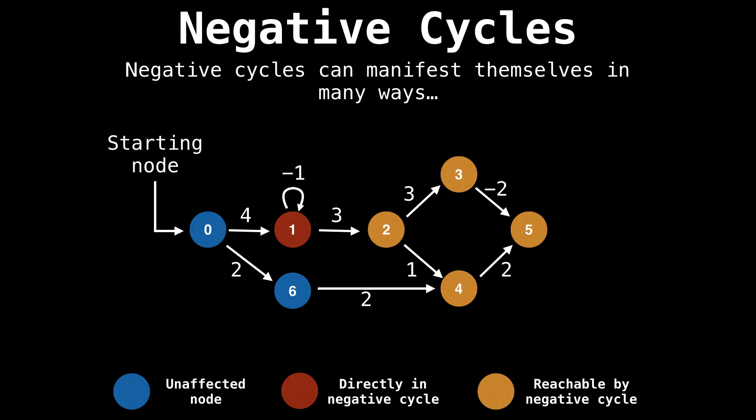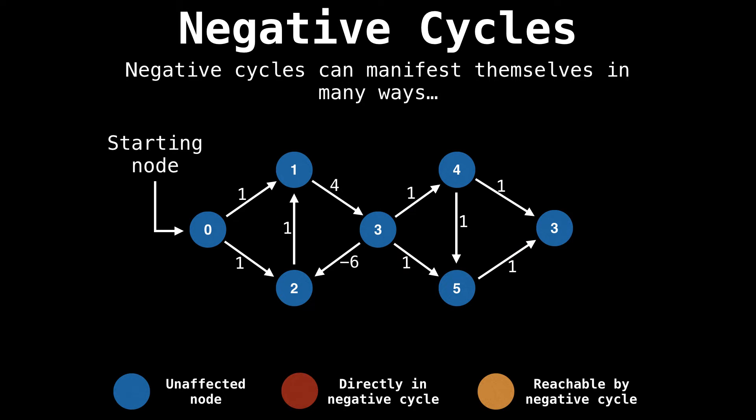Let's look at another example. In this graph, a negative cycle manifests itself, but not as the result of a negative self loop. Instead, through a cycle of nodes whose net gain is less than zero. If you add up the edge values 1, 4, and minus 6 attached to nodes 1, 2, and 3, the net change is minus 1. If we look at where the cycle can reach, we can see that the entire right side of the graph is affected. So hardly any nodes are safe from this negative cycle.